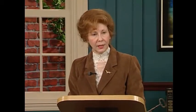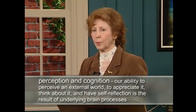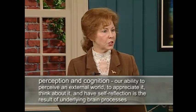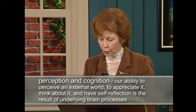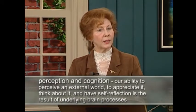Another conclusion is that perception and cognition — our ability to perceive an external world, to appreciate it, our ability to think, have self-reflection, and reason — is also the result of underlying brain processes. The brain gives rise to the mind. The brain gives rise to our subjective sense of experience. We don't know how it does it, but we're sure that it does. Everything we see, hear, feel, think, or do is the result of underlying brain processes. It is the neural activity of our brains that allows for our ability to have experience in the world.